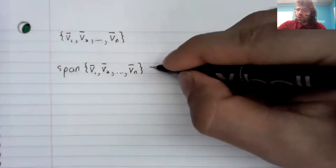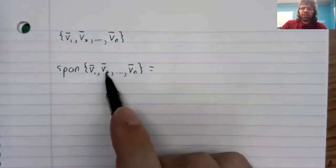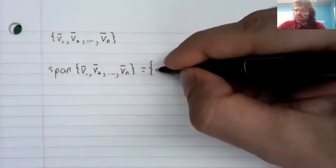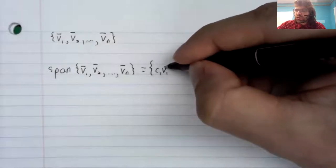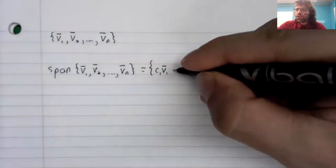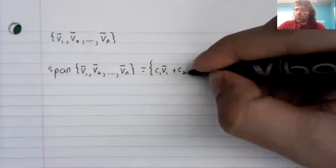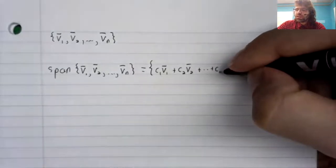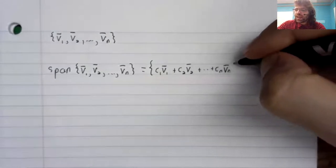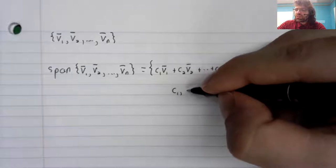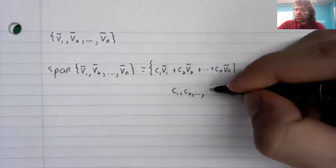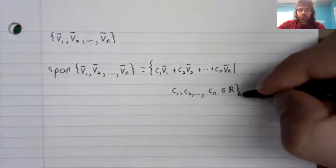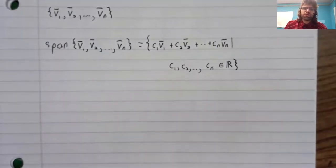The span is defined to be all the linear combinations of these vectors. That is, the set of all vectors of the form C1V1 plus C2V2 up to CnVn, where these scalars run over all the real numbers.